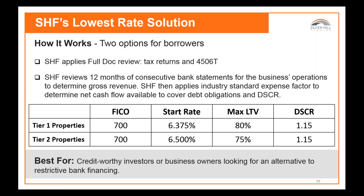We have three different solutions. Our lowest rate solution — which we call full doc — requires tax returns and gets our lowest available rates, starting in the low to mid sixes. This is typically for the near miss at the bank: the person with a high FICO who can verify income, but for some reason the loan didn't work at the bank — perhaps a debt service requirement that was too high. On average, these rates are typically under 7% even including loan level adjustments and yield spread.